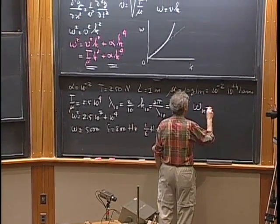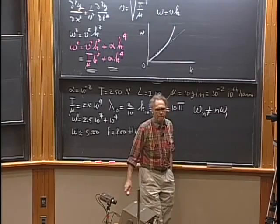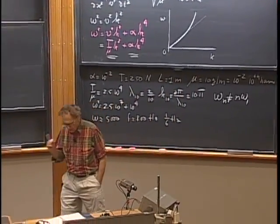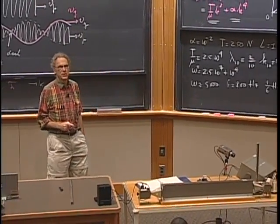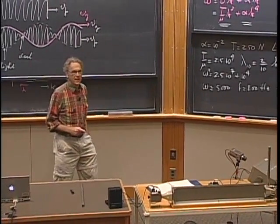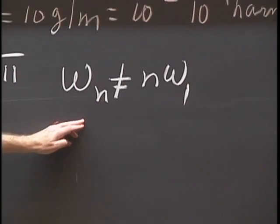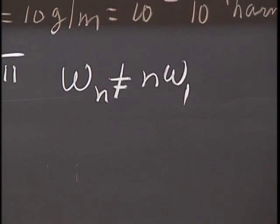The bottom line is that for a real piano string, omega_n is no longer exactly n times omega₁. That is the reason why pianos go sharp, as musicians say — at higher harmonics the frequency is a little higher than linearly proportional with n.